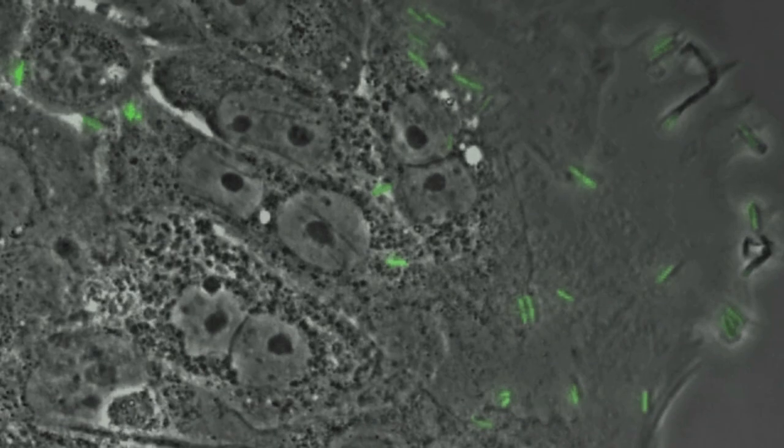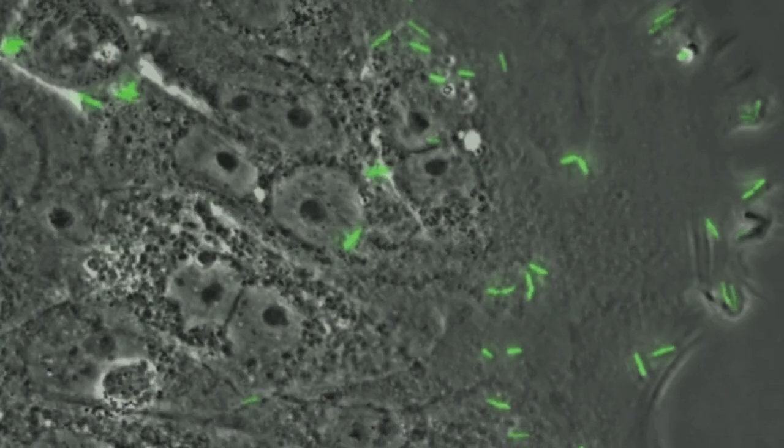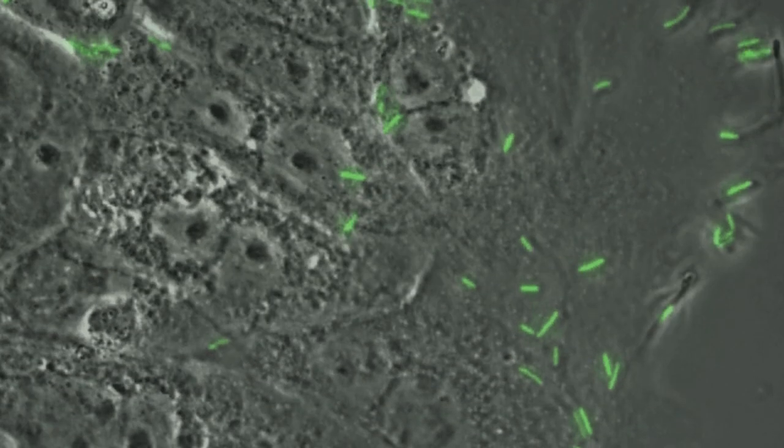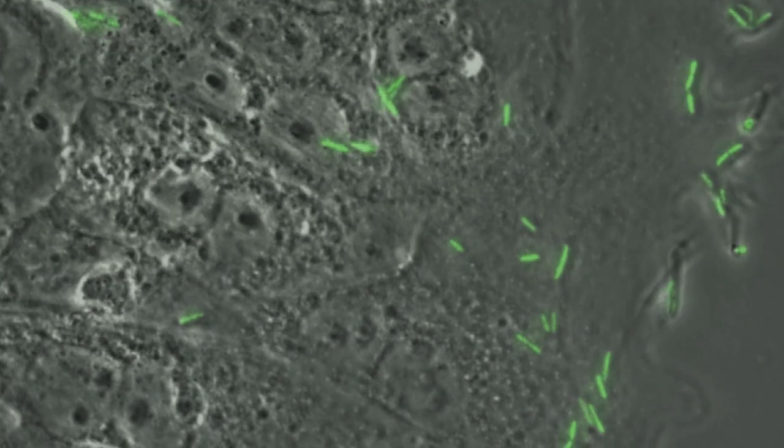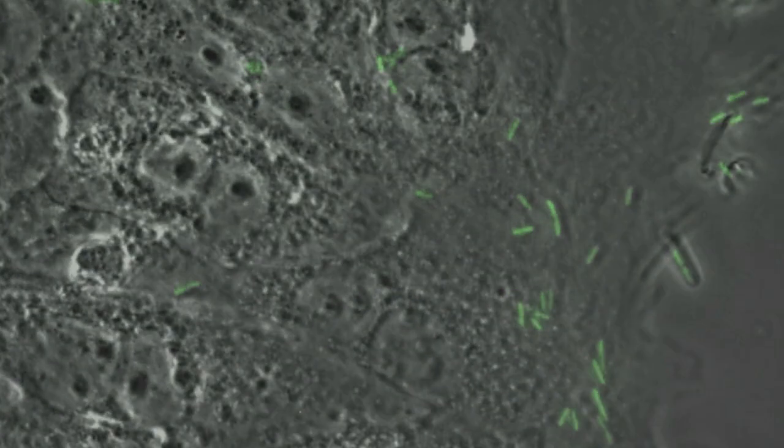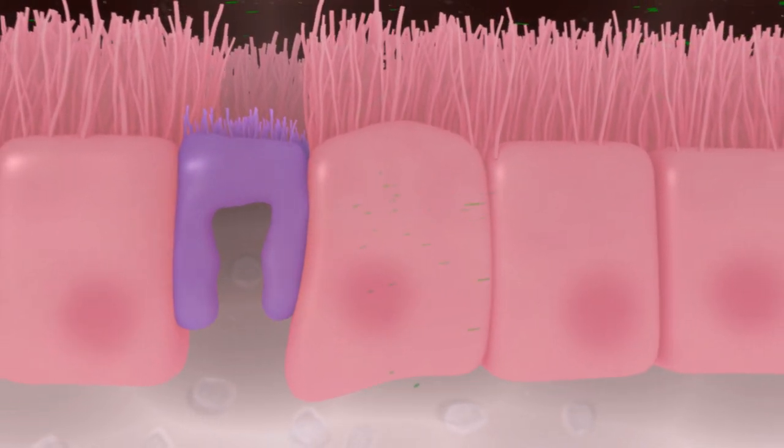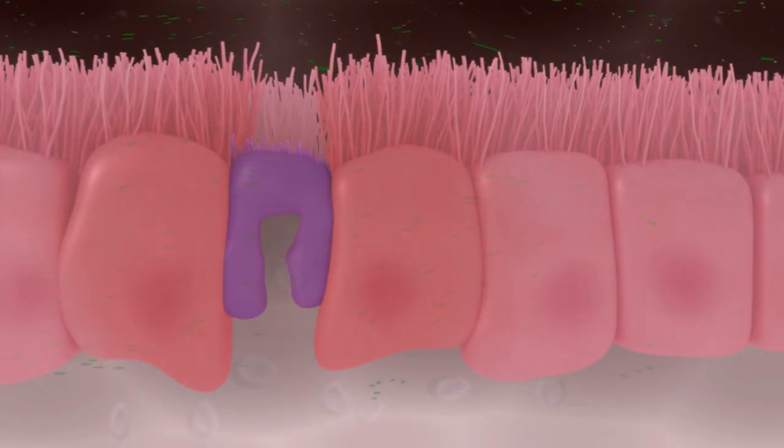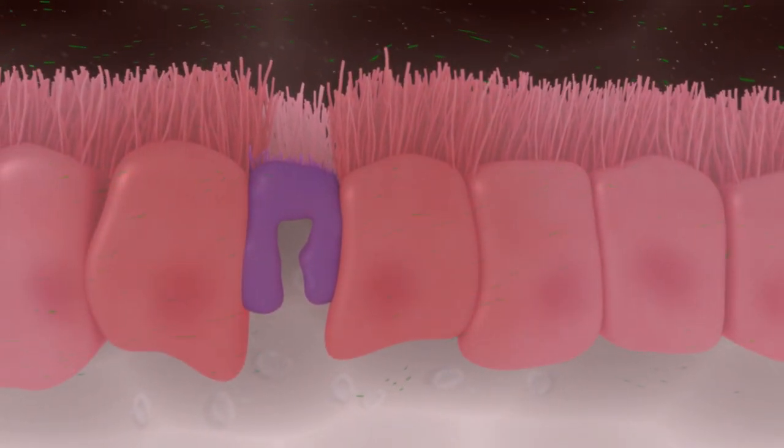This allows efficient intracellular movement and accelerates dissemination from cell to cell. The rapid lateral spread of infection through the epithelial layer, without the need to re-enter the basolateral pocket to infect adjacent cells, is a characteristic of Shigella pathogenesis that makes it particularly detrimental to infected individuals.